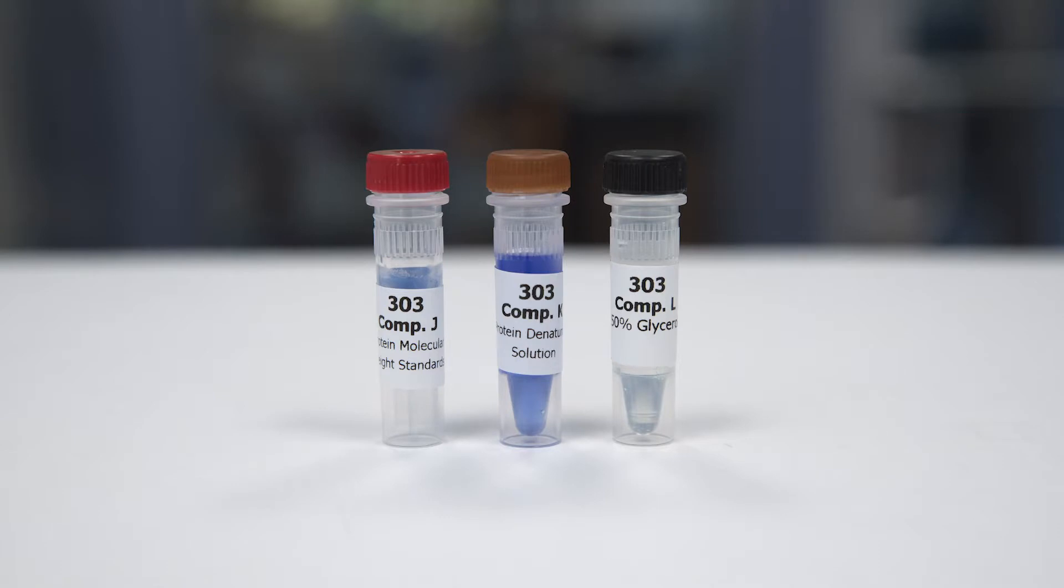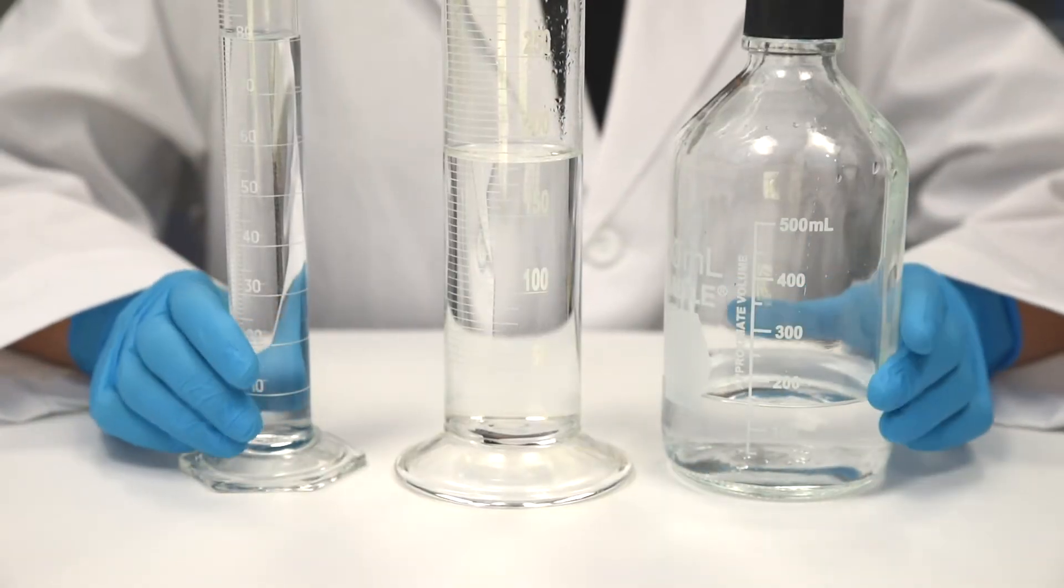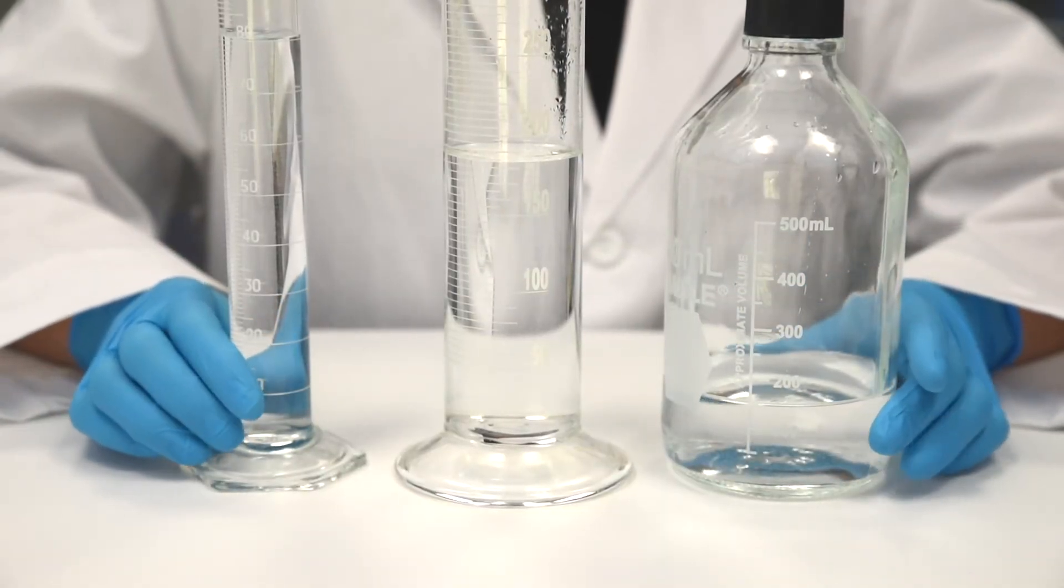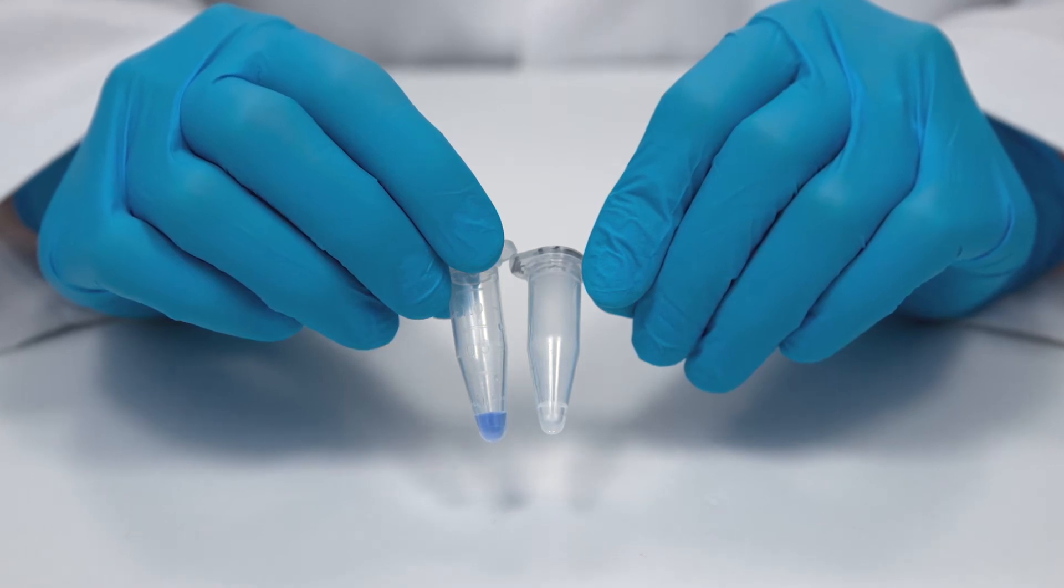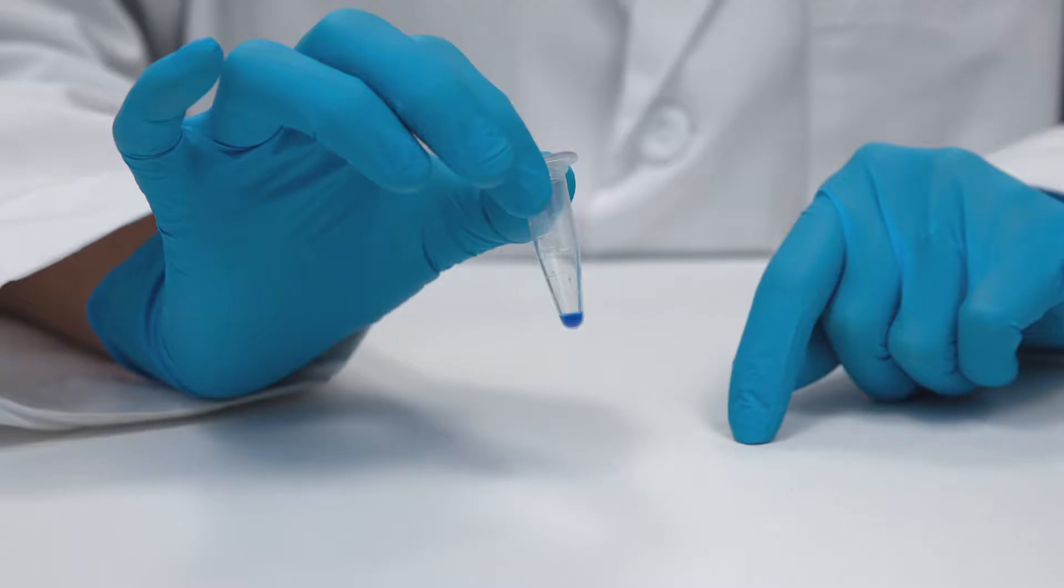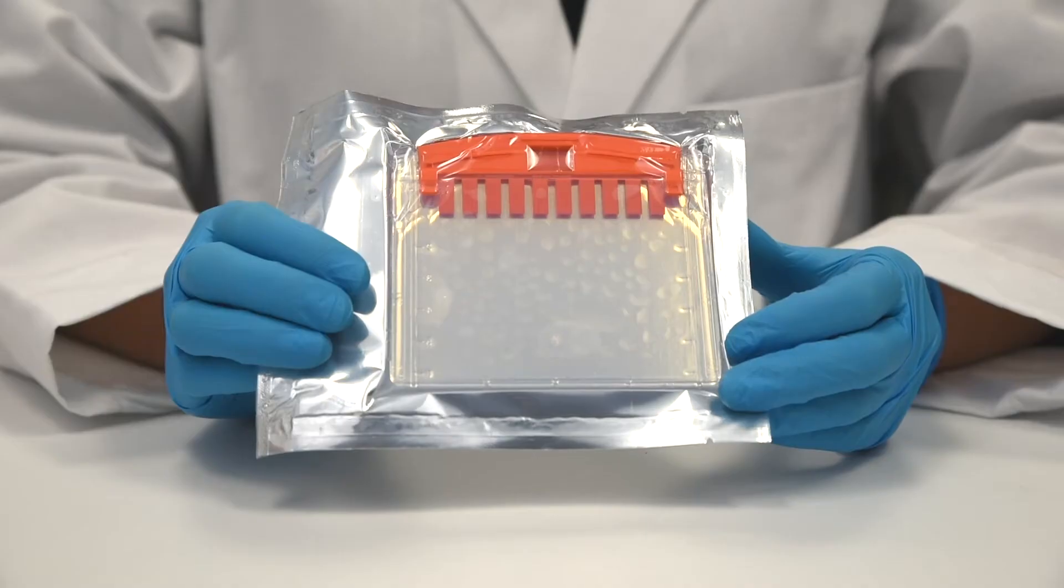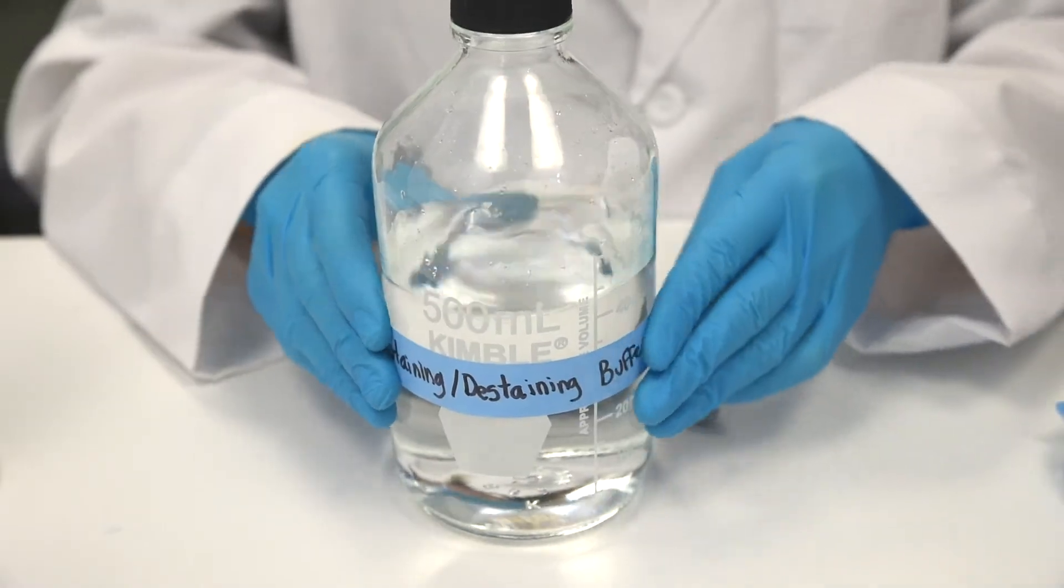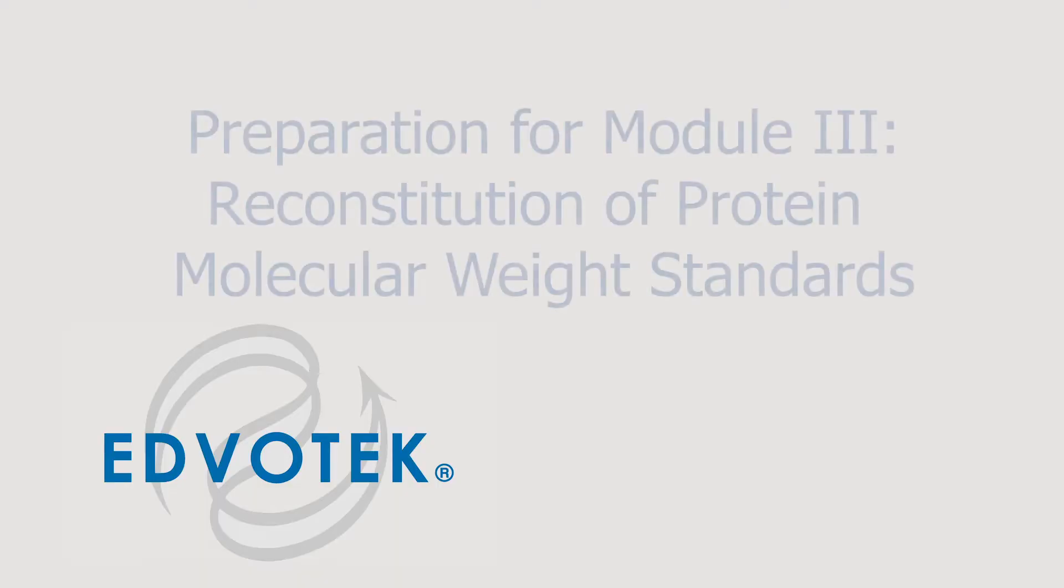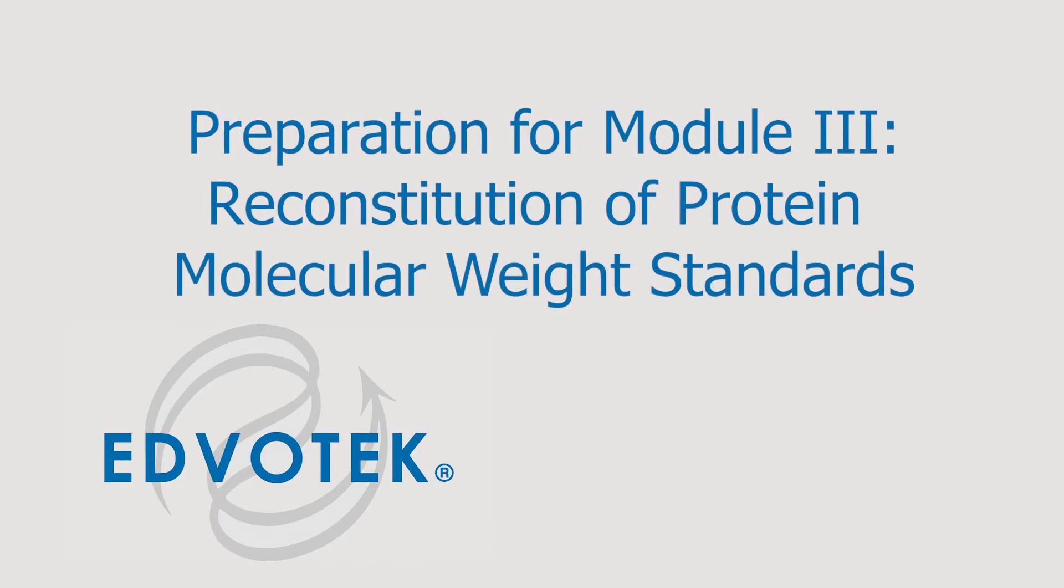Each group will need tubes of protein denaturing solution and 50% glycerol, rehydrated protein molecular weight standards, one shared SDS page gel, and staining de-staining buffer. Reconstitution of lyophilized protein molecular weight standards: Step one, add 130 microliters of distilled or deionized water to the tube of protein molecular weight standards.